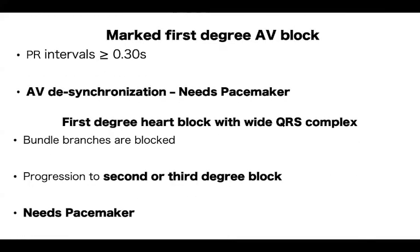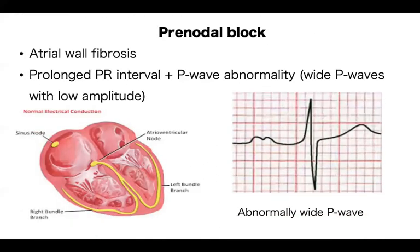This brings up the concept of marked first-degree AV block. The PR interval is supposed to be a maximum of 0.2 seconds. When it goes past 0.3 seconds, there is serious trouble. These patients are at risk of progression to second or even third-degree AV block, and the risk of sudden death increases. Therefore, if we pick up a patient with a PR interval of 0.3 seconds or longer, this patient needs a pacemaker inserted, and we must make every effort to refer to a cardiologist.